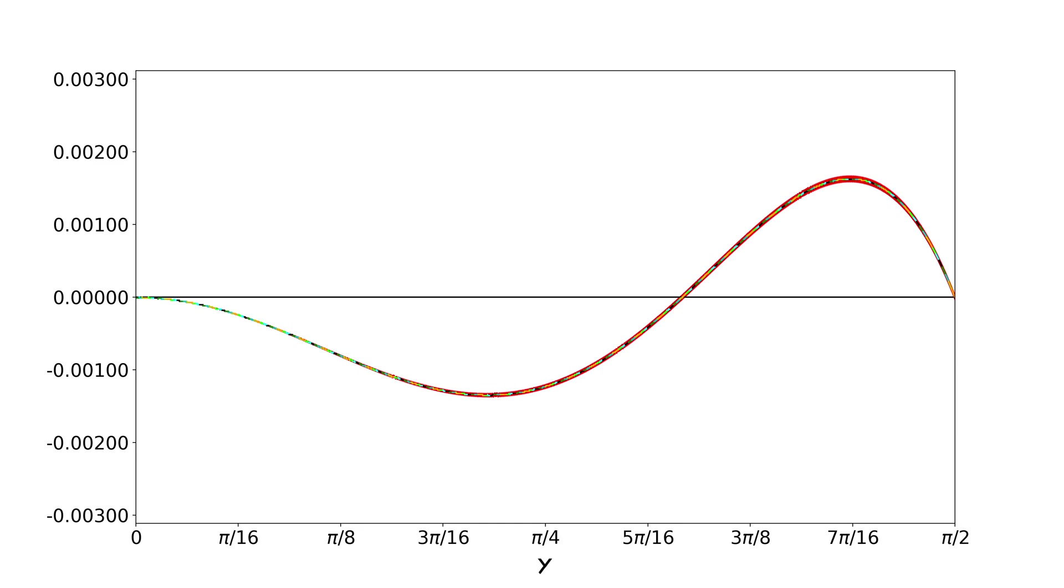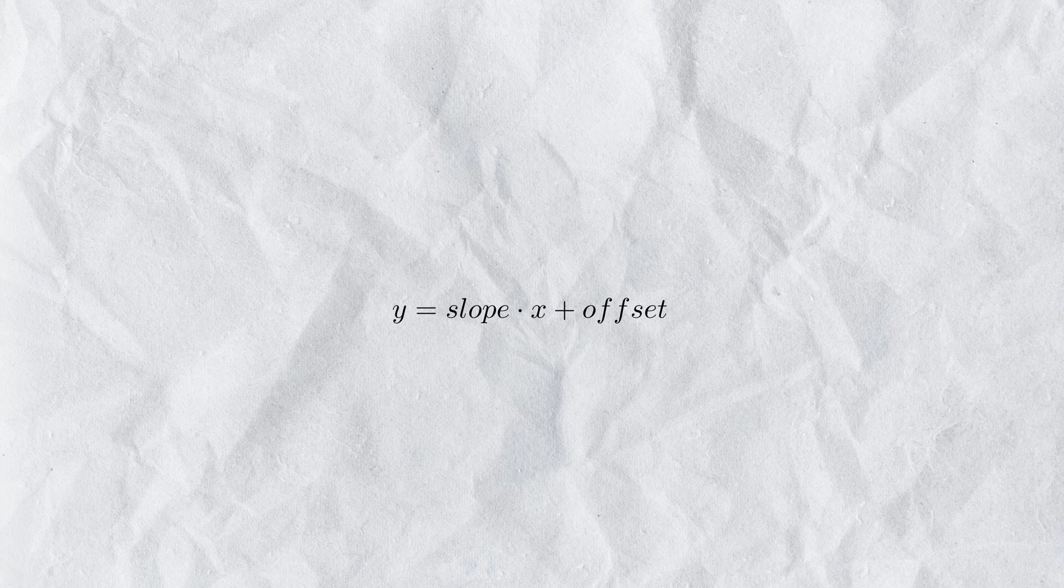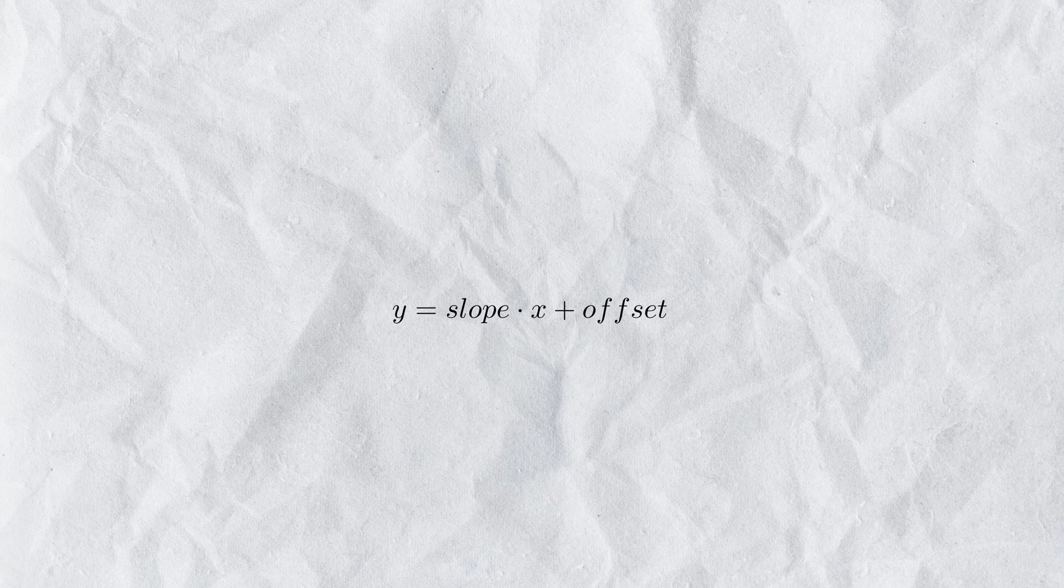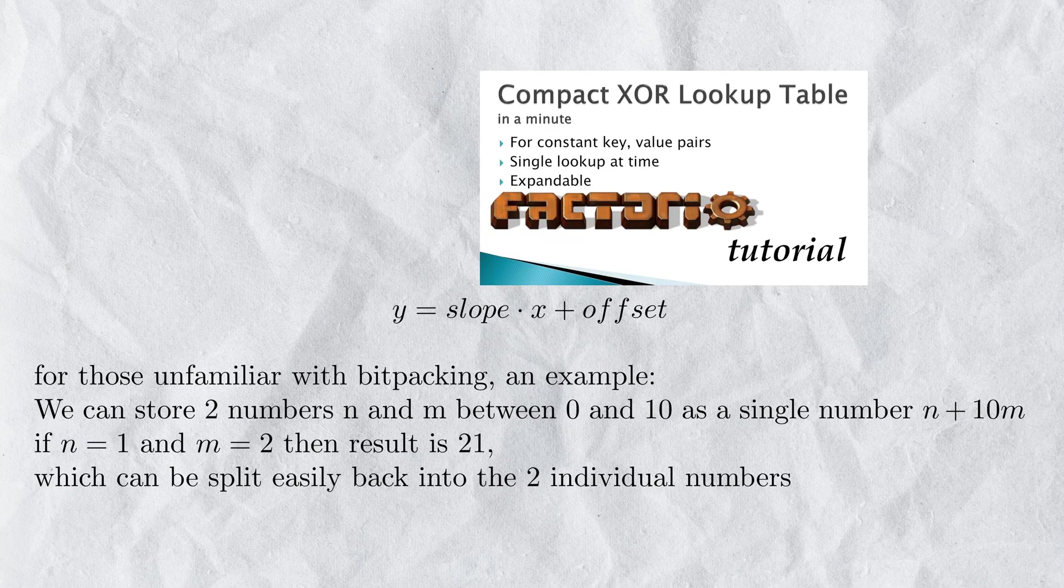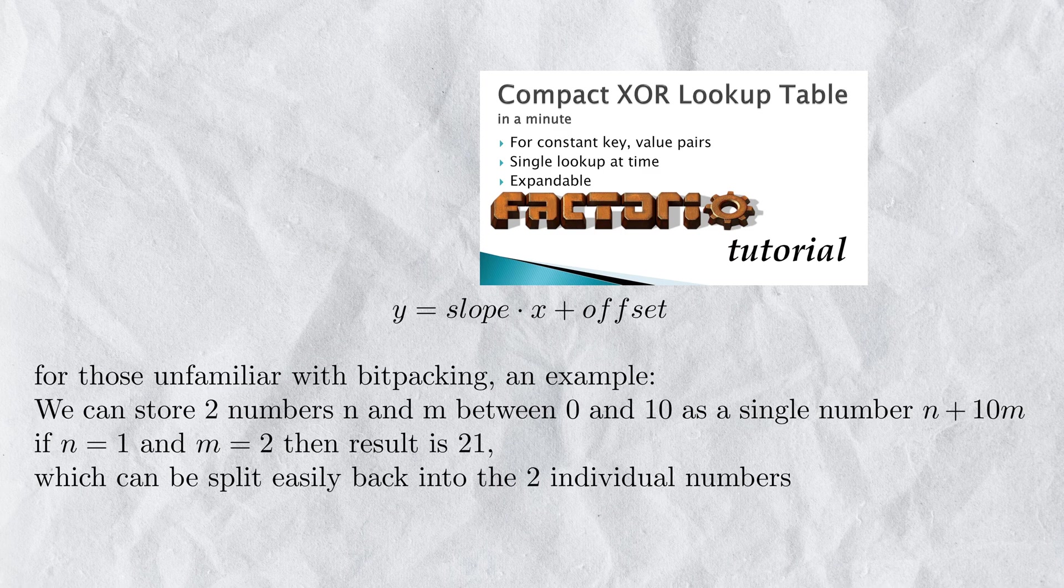Now we have the linear functions we want. But how do we store them in Factorio? Linear functions can be described as the slope times x plus offset. So we only need to store the slope and the offset. Luckily, because the error is small, we can bitpack these together. Then we can store these in a compact XOR lookup table. I made a video about those before. If you want to know how they work, links are everywhere.